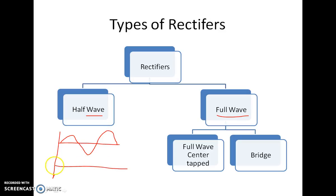the half-wave as the name suggests will convert only half of the wave whereas the full-wave would convert both the cycles and hence the name full-wave. The full-wave is again divided into two types: full-wave center tapped and bridge.